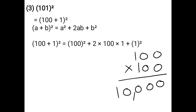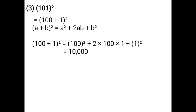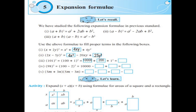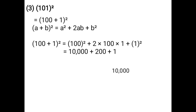Square of 100 is 10,000 — there are four zeros. So 100² = 10,000. Then 2 × 100 × 1 = 200. Plus 1² = 1. You have to fill the correct numbers in the boxes: 10,000 + 200 + 1. Now you have to add these together.